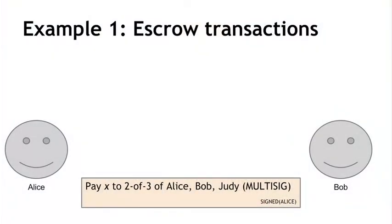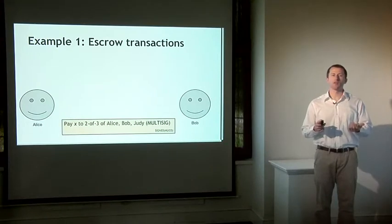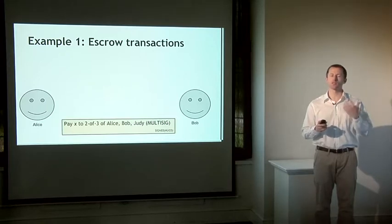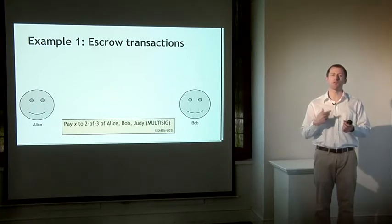So how does this work? Alice is going to send the money not directly to Bob, but create a multi-sig transaction that requires two of three people to sign in order to redeem the coins. Those three people are going to be Alice, Bob, and Judy, who's a judge who's going to come into play in case there's any dispute. Alice will create this transaction for the desired amount with that two-out-of-three multi-sig between Alice, Bob, and Judy. Alice signs the transaction redeeming some coins that she owns and this will get published in the blockchain. At this point, these coins are held in escrow between Alice, Bob, and Judy, and any two of them can specify where the coins should go.